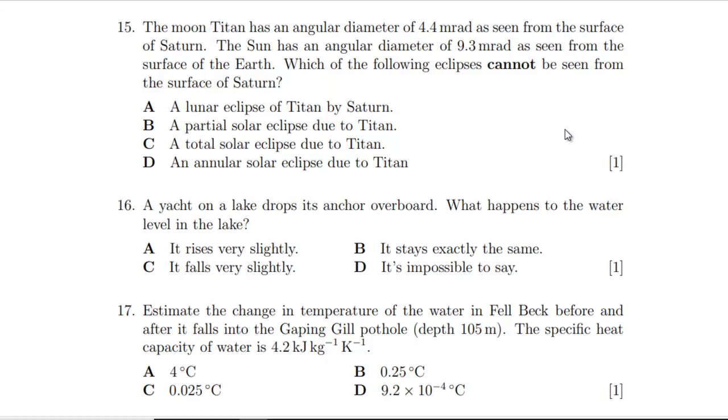Question 15: The moon Titan has an angular diameter of 4.4 milliradians seen from the surface of Saturn. The sun has an angular diameter of 9.3 from the surface of the Earth. Which of the following eclipses cannot be seen from the surface of Saturn? I think some pictures are going to be necessary here. Let's say with the Earth one first because we know more about this. We know that we can get total eclipses. Let's start here with Earth. If that was the sun and then that is the moon, we're looking at a radius for each one of those. That is 9.3 times 10 to the minus 3.